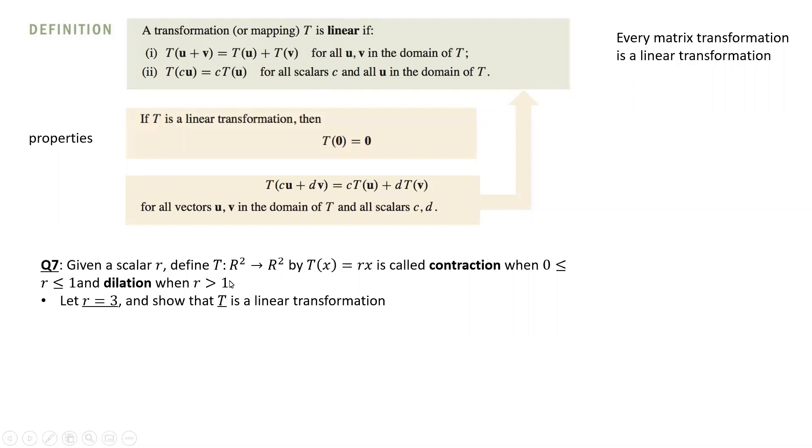In computer science, biology, you can see these transformations everywhere. Let's just take a specific value of our parameter r. Let's take r equals three, which means we will have a dilation of vectors. For example, here I've plotted five different vectors.